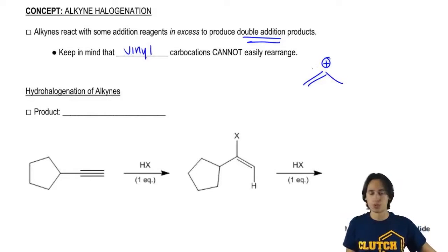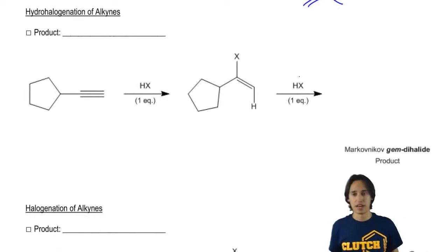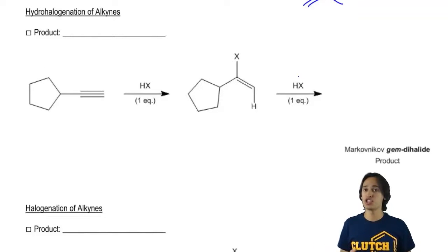So let's go ahead and look into the first one and the first one is a hydrohalogenation of an alkyne. Now a hydrohalogenation, remember, is just an HX with a triple bond.